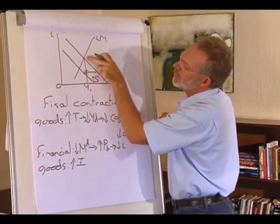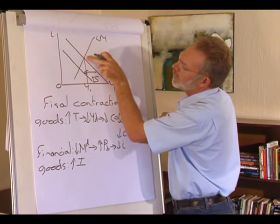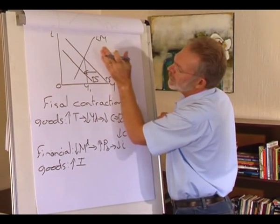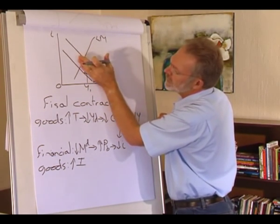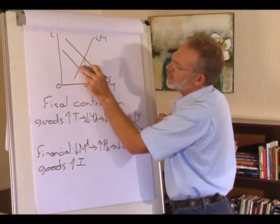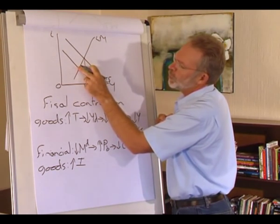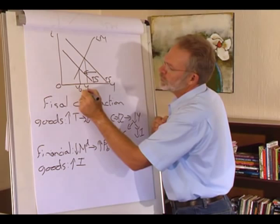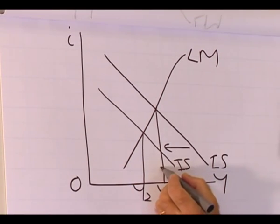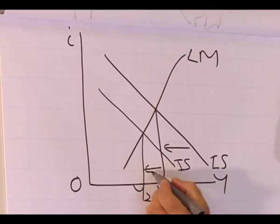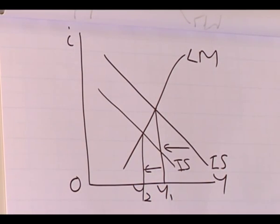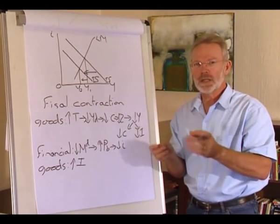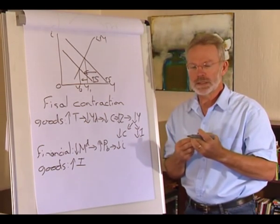We started off at output level Y1. Demand for goods and services decreased and a new equilibrium point was established at Y2, so the output level in the economy decreased. We still need to make sure we've answered everything correctly.